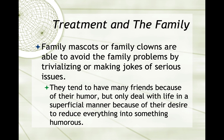Family mascots or family clowns are able to avoid family problems by trivializing or making jokes of serious issues. They tend to have many friends because of their humor, but only deal with life in a superficial manner because of their desire to reduce everything into something humorous — everything is humorous to them. All of these individuals are more likely to marry other alcoholics because, as with the model child, those are the only people they see as attractive — somebody who was just like mom or just like dad.